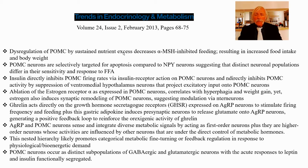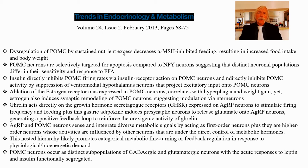POMC neurons are selectively targeted for apoptosis compared to NPY neurons, suggesting distinct neuronal populations with different sensitivity to free fatty acids — probably because of the lack of control over reactive oxygen found in POMC neurons. The POMC neurons represent the anorexigenic pathway; there wouldn't be a need to control reactive oxygen there because there would already be a full load of fatty acid in storage. The fundamental regulation of the POMC neurons should be roughly contrarian to the NPY axis — and that's exactly how it plays out.